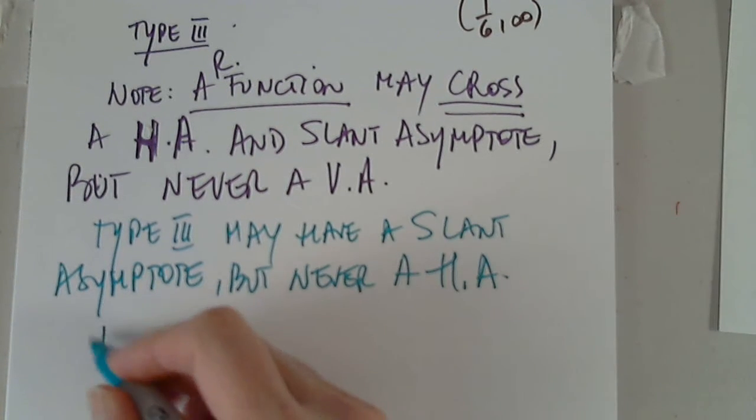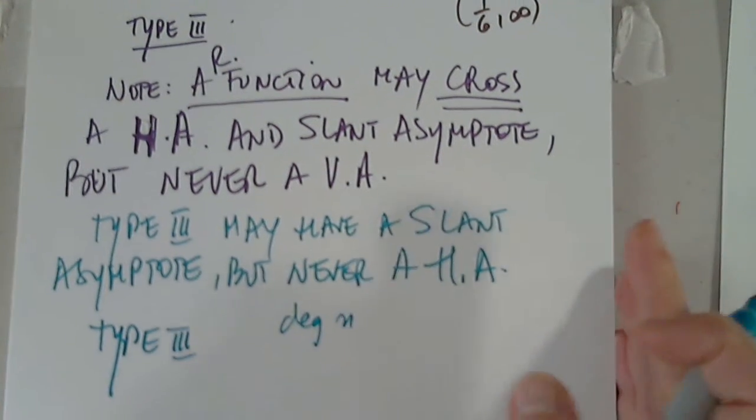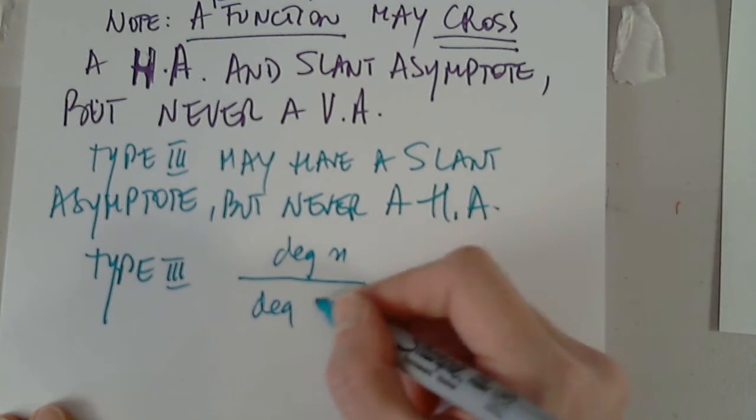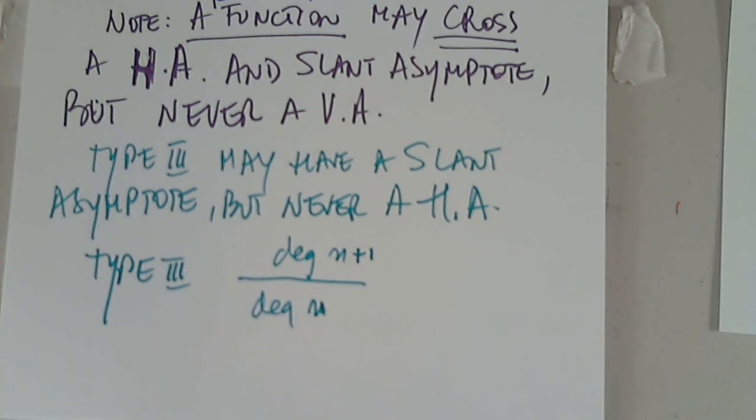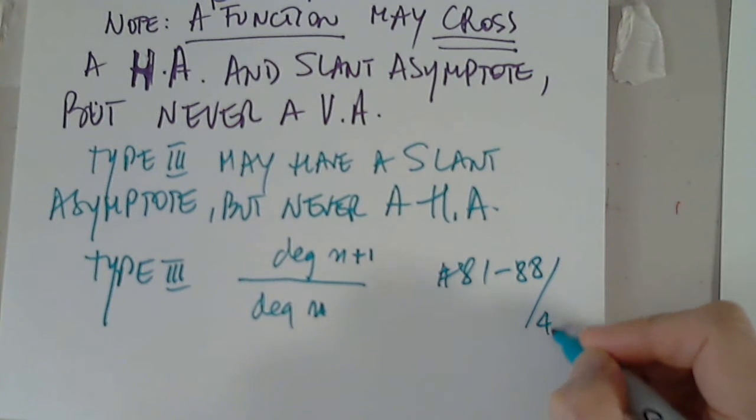So, the type 3 is some degree at the top, n degree, n in the denominator, and n plus 1 at the top, or n and n minus 1. It doesn't matter. But since we wrote it as n plus 1 over n, can anyone choose? Those problems are not between 57 and 80. However, they are between 81 and 88. They are a different animal. 81 and 88 on page 427.